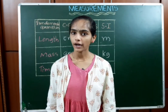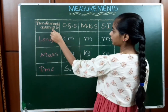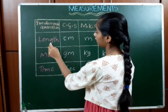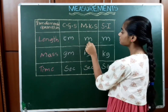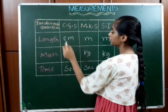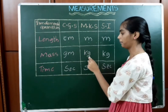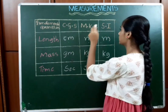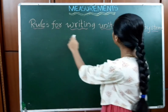The units of fundamental quantities in different systems are shown here. For length: the CGS unit is centimeters, the MKS unit is meters, and the SI unit is meters. For mass: the CGS unit is gram, the MKS unit is kilogram, and the SI unit is kilogram. For time: the CGS, MKS, and SI units are all seconds.